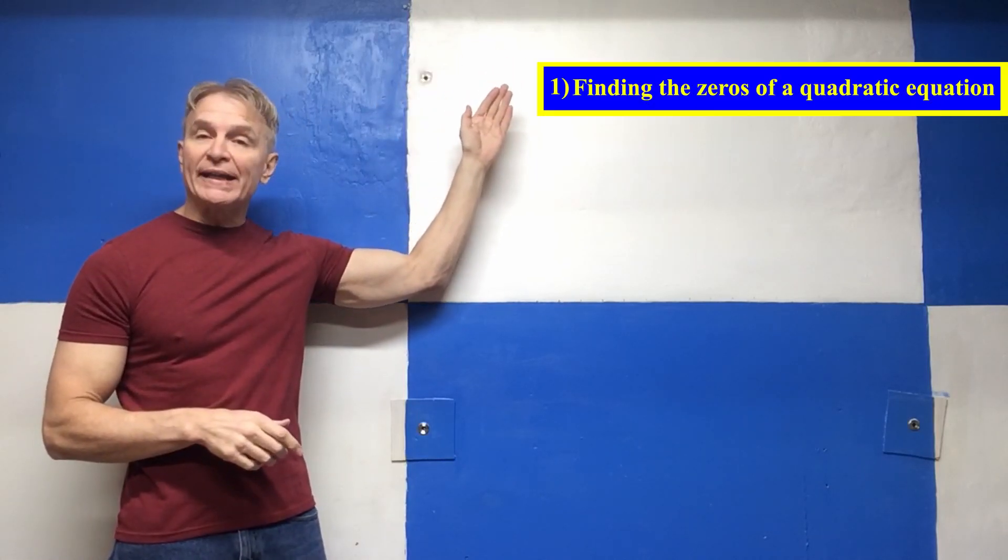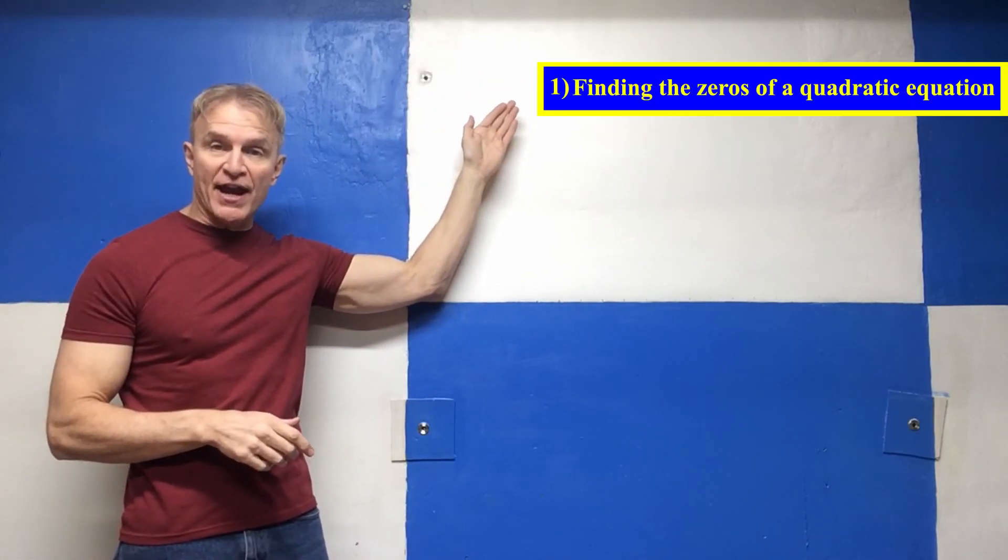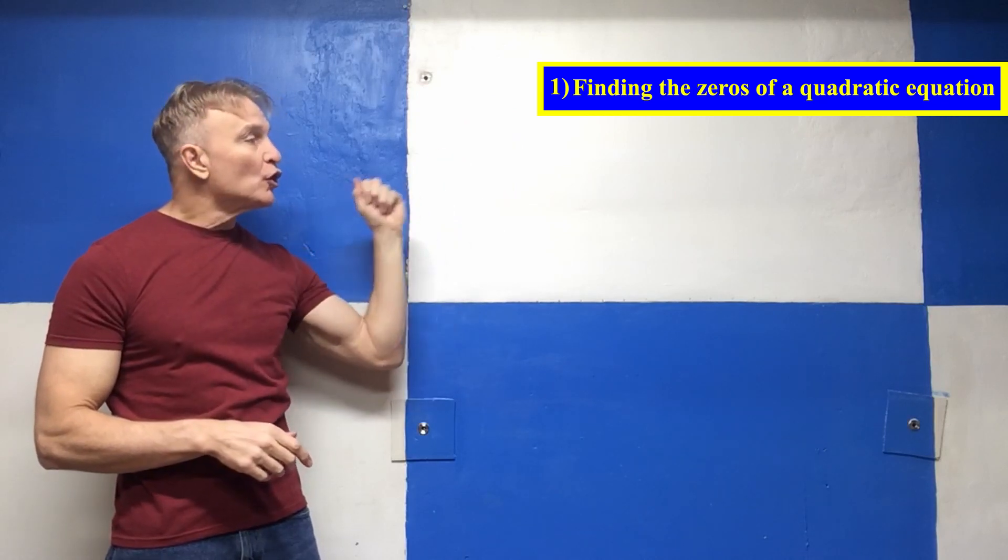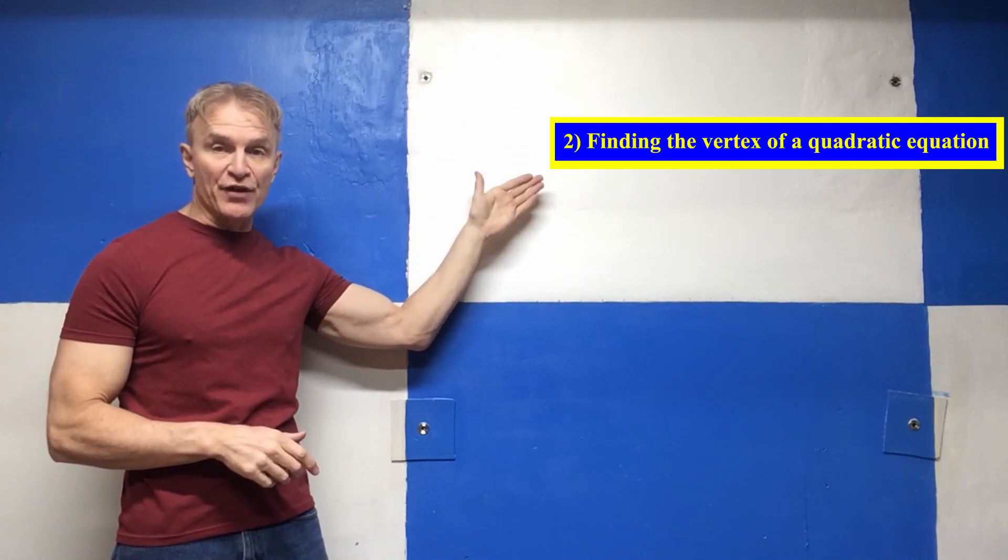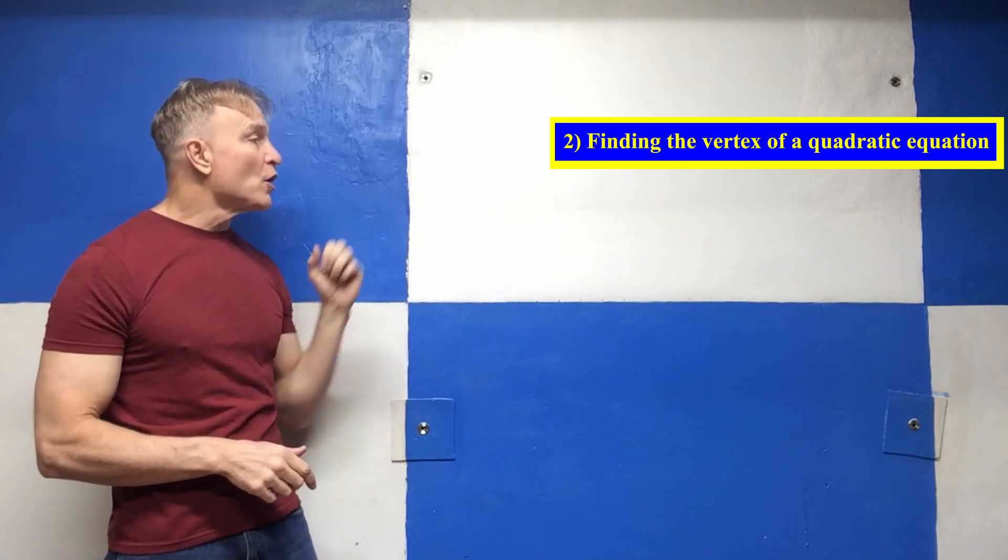Before getting started, let's begin by mentioning a few areas where completing the square is used. I'm going to mention five areas that come to mind. One, finding the zeros of a quadratic equation. Two, finding the vertex of a quadratic equation. Three, formatting the equation of an ellipse.